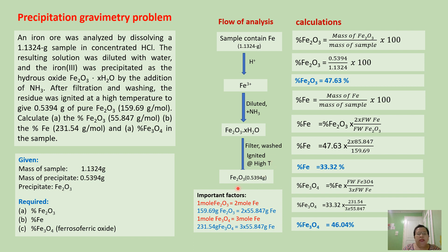Before we calculate, we have to write down first all important conversion factors. In this problem, 1 mol of ferric oxide contains 2 mols of iron. The formula of ferric oxide is Fe2O3, so 1 mol of Fe2O3 contains 2 mols of Fe. And 1 mol of Fe2O3 is equal to 159.69 grams of ferric oxide.